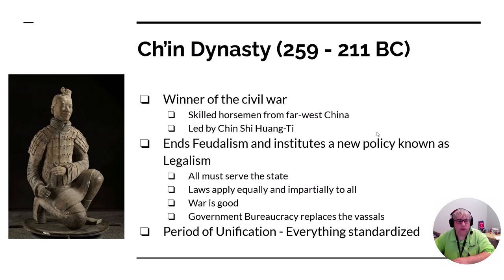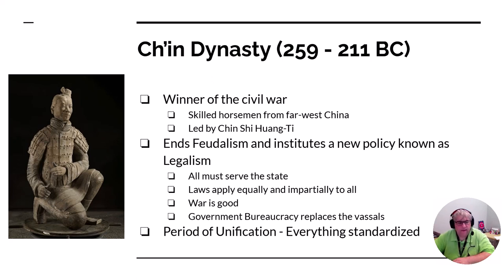Qin Shi Huangdi also has a dark side. He was a megalomaniac who thought he should be in charge of everything, and was very suspicious that people were out to get him. Very often, he would take lords who opposed him, topple them, kill them, and then put a person who looked like him into the castle of the person he just took over.